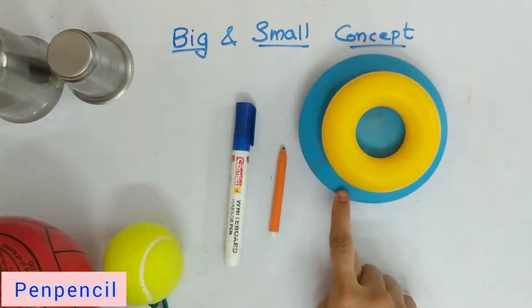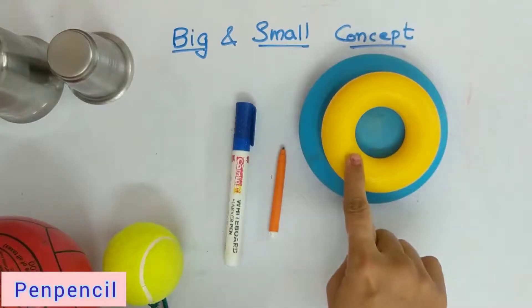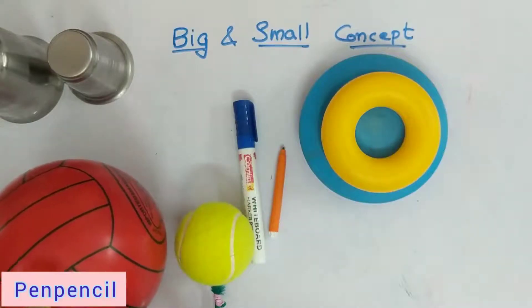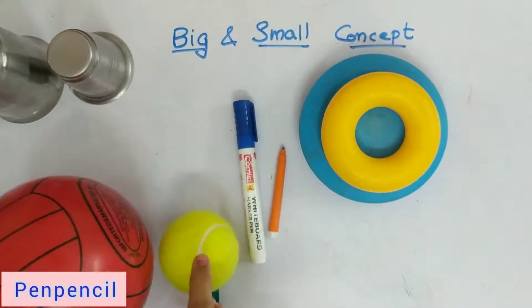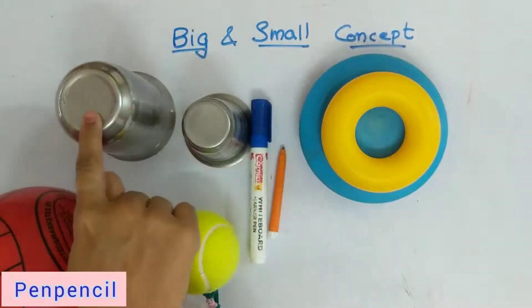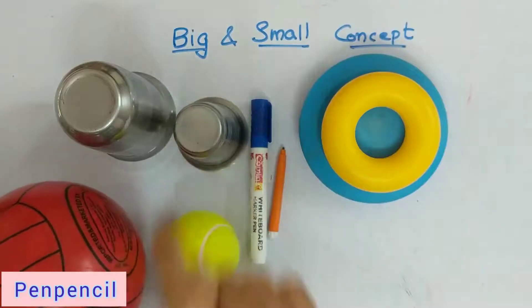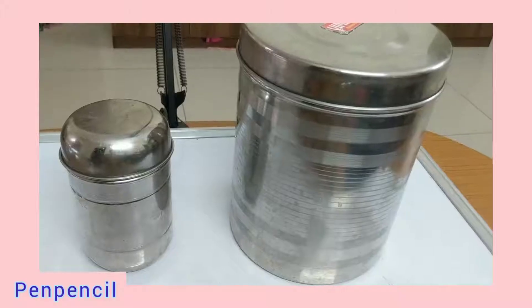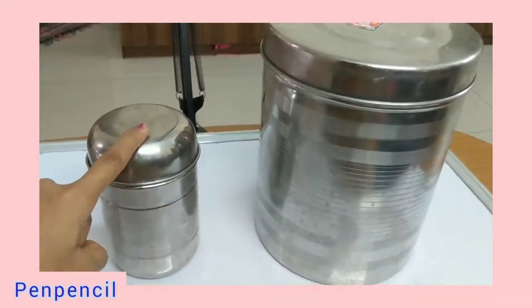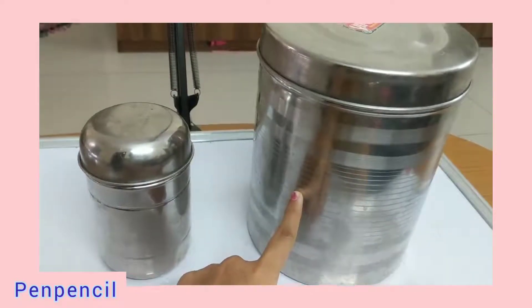The yellow toy — one is bigger, one is smaller. The red one is bigger, one is smaller. This is a bigger ball, this is a small ball. This is a bigger glass and this one is a small glass.